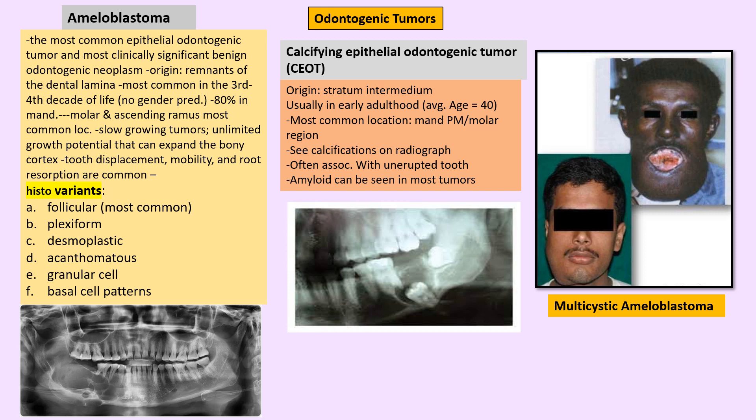Ameloblastoma is the most common epithelial odontogenic tumor, arising from remnants of the dental lamina in the third and fourth decades of life, mostly in the mandibular molar and ramus area. It is a benign tumor that slowly expands the bone cortex and can cause tooth displacement, mobility, and root resorption. The follicular pattern is the most common variant. Vicker-Gorlin criteria for histologic diagnosis include: tall columnar cells, hypochromatic nucleus, palisading of nuclei, reverse polarity (nuclei away from basement membrane), and subnuclear vacuolization.